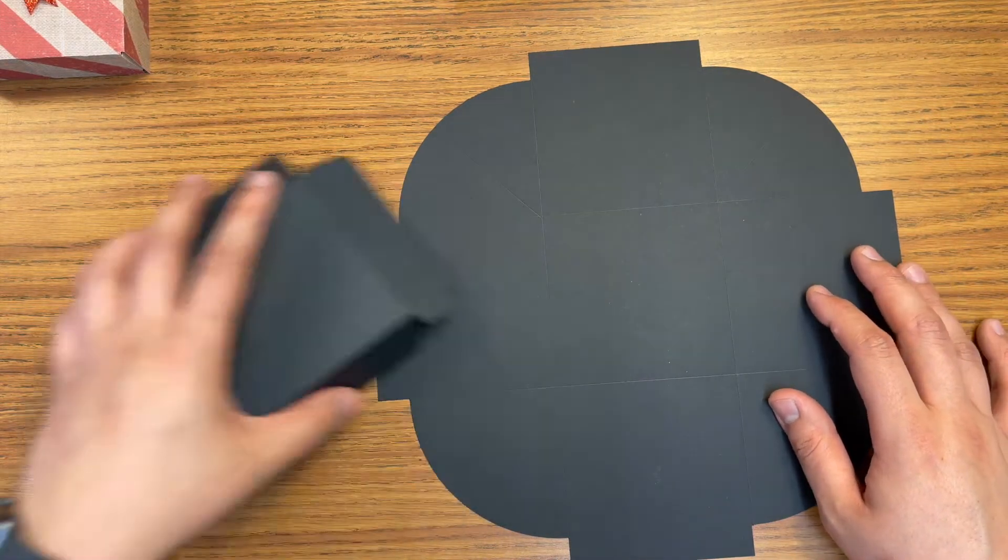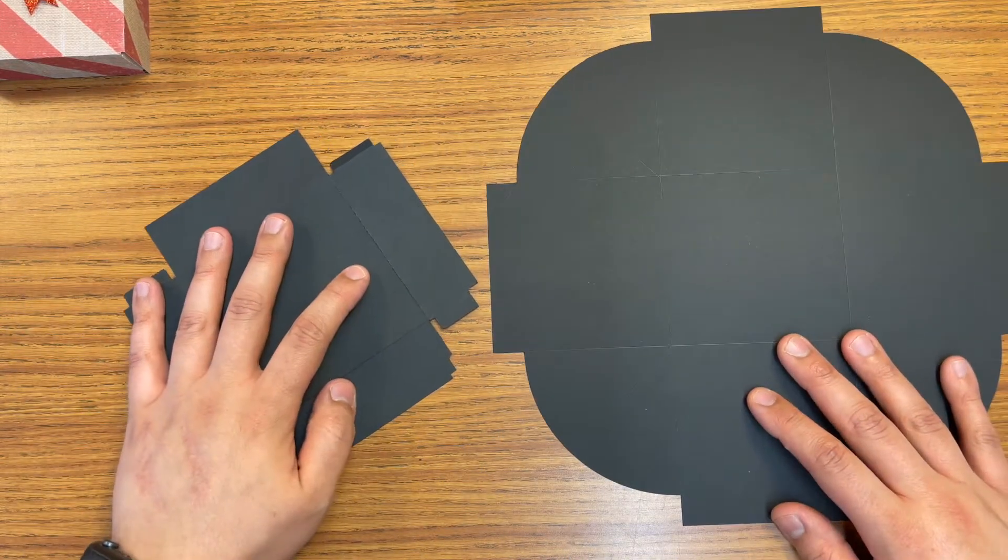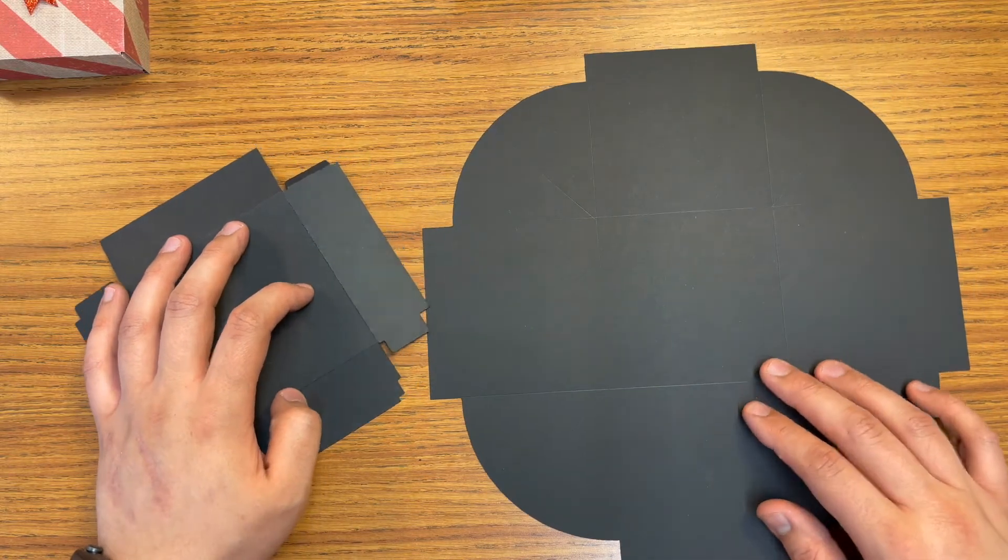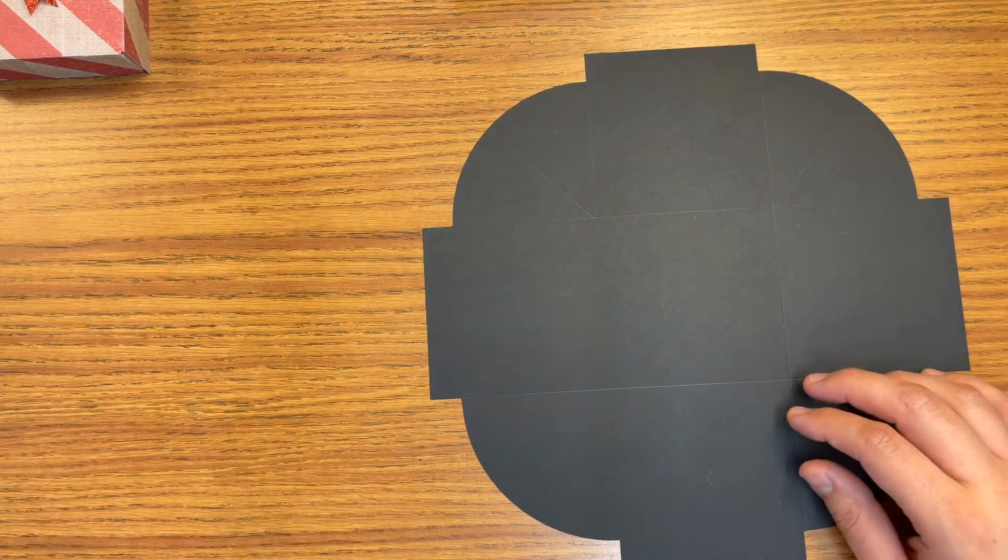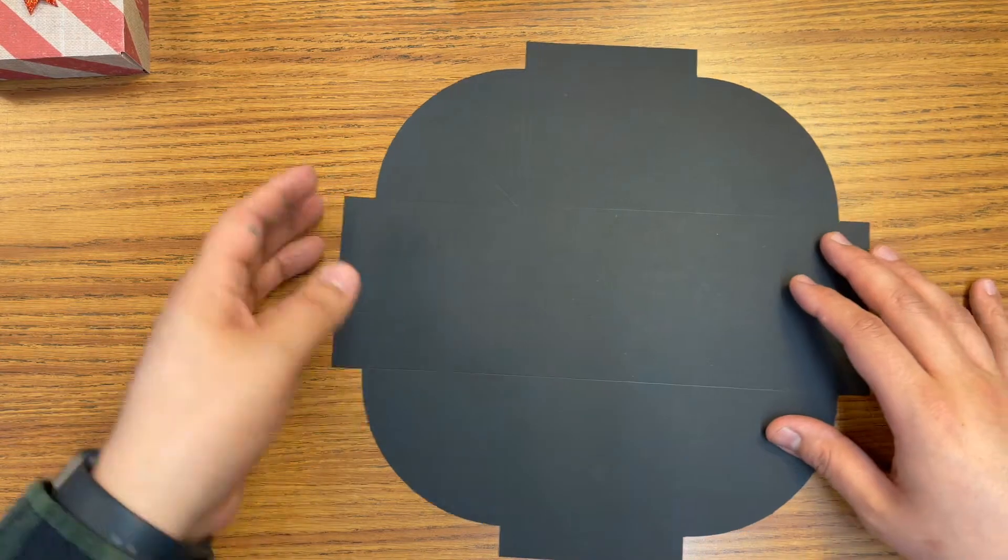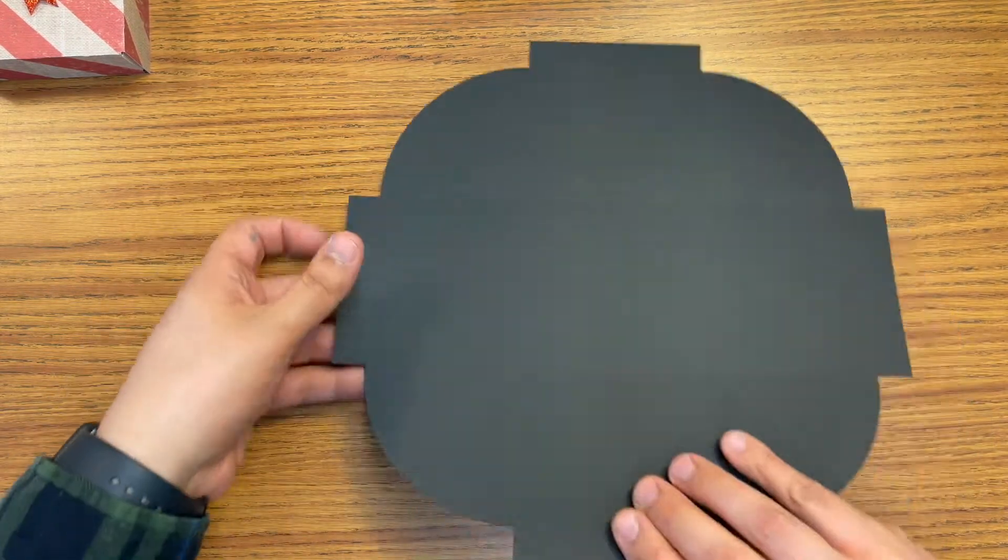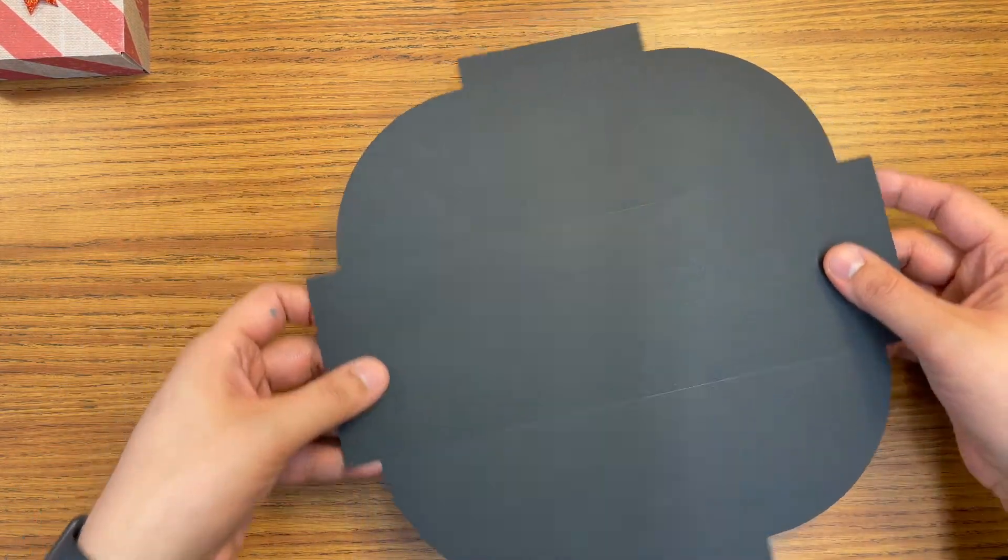To create the box, you're going to grab these two pieces first and you're going to go ahead and fold it. So we'll start off with the largest part, the base, the actual box. So, it's already cut down to size.